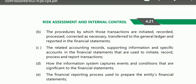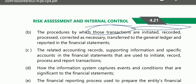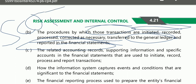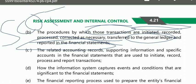The auditor shall obtain an understanding of the information system and business processes related to financial reporting including the following: the classes of transactions and entity operations that are significant to financial statements. You have to analyze those in detail because they are significant classes of transactions — SCOT. The auditor needs to understand the procedure by which those transactions are initiated, recorded, processed, corrected as necessary, transferred to the general ledger, and reported in the financial statements.